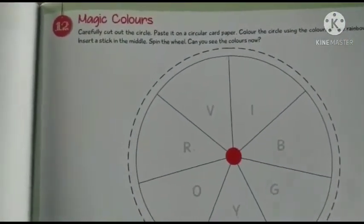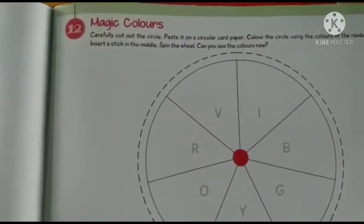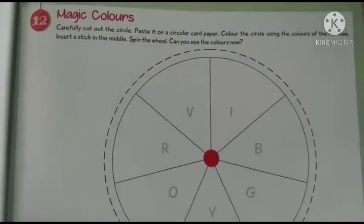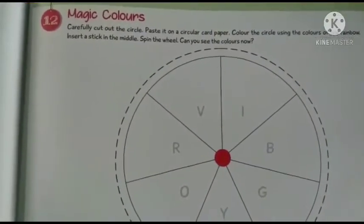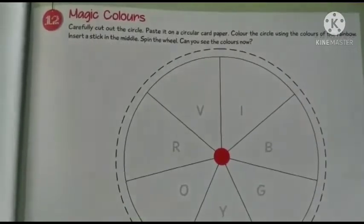Look at this page. Carefully cut out the circle. Paste it on a circular card paper. Color the circle using the colors of the rainbow. Insert a stick in the middle. Spin the wheel. Can you see the colors now?